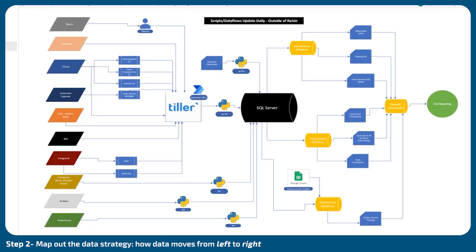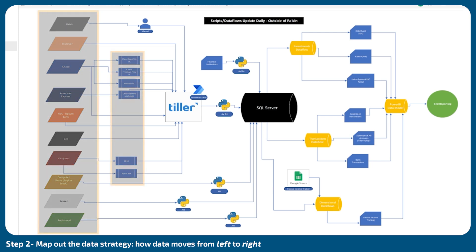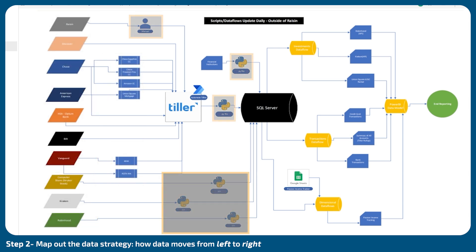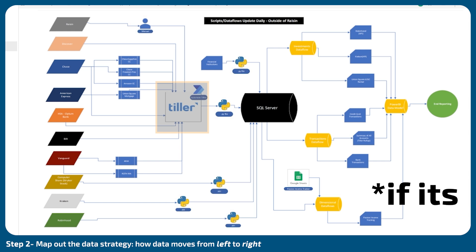Step two, in my mind, is going to be kind of hard and don't expect to get this right the first time — I certainly didn't. This is my current solution on how to map out your data strategy from left to right. On the left, I just have all my main accounts and I put them into subgroups if necessary. And I label whether it's a manual workload or if it's driven by an API or driven by Tiller.